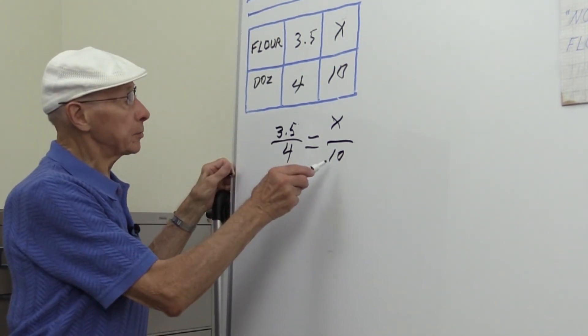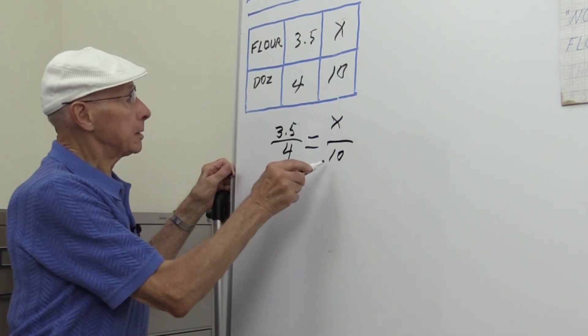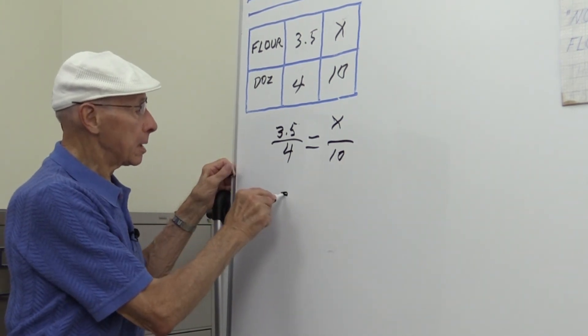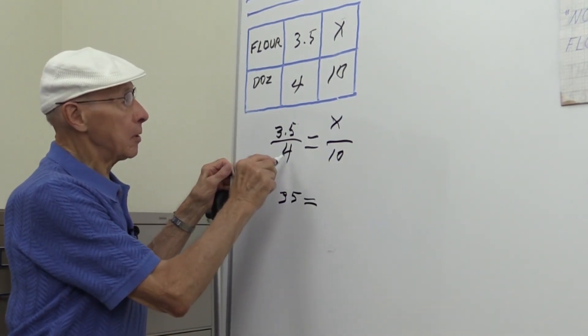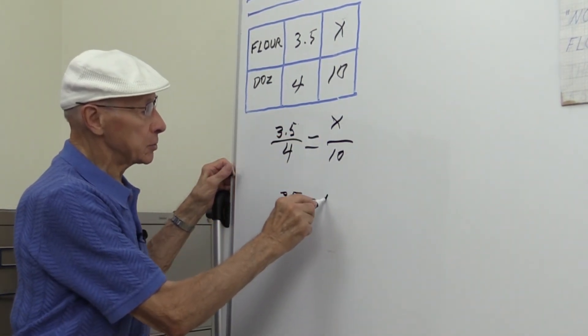So if we cross multiply, which gives us a cross product: 10 times 3.5 is 35, and that's equal to 4 times x, which is 4x.